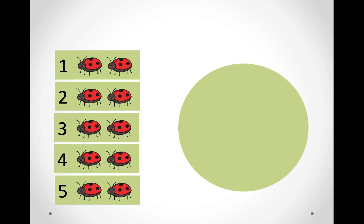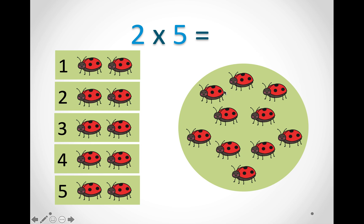In this picture we have five groups — one, two, three, four, five — and in each group there are two ladybirds. So we can count them all, or we can count in twos: two, four, six, eight, ten. So the answer is ten.